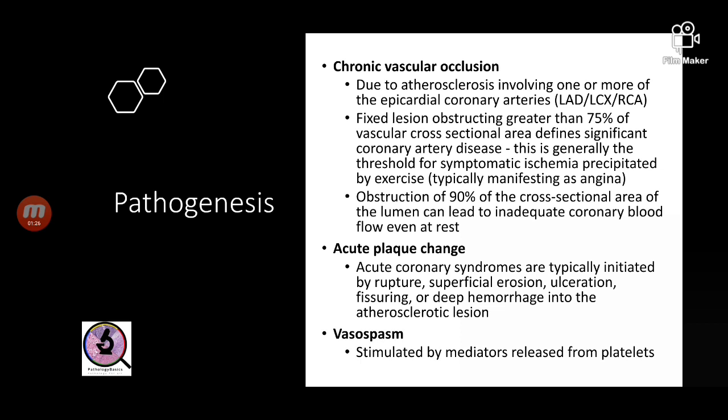Pathogenesis rests on three main points: first is vascular occlusion, then acute plaque change, which may be supplemented by vasospasm. Occlusion can happen in any of the main coronary arteries — coronary arteries are end arteries supplying a particular region of the myocardium, and developing collaterals requires a lot of time. The three main vessels are the LAD (left anterior descending), LCX (left circumflex), and RCA (right coronary artery).